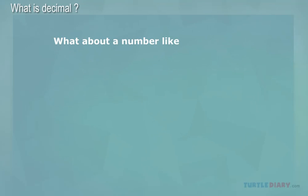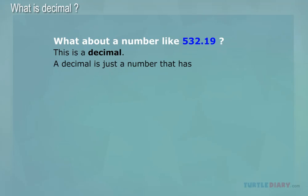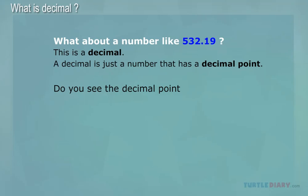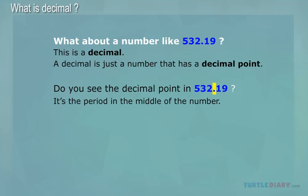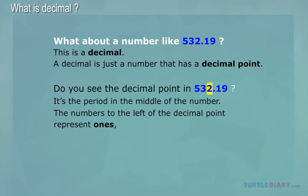What about a number like 532.19? This is a decimal. A decimal is just a number that has a decimal point. Do you see the decimal point in 532.19? It's the period in the middle of the number. The numbers to the left of the decimal point represent 1s, 10s, and 100s as before.